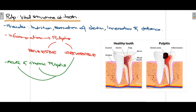When this pulp is inflamed it is known as pulpitis. Pulpitis is of two types: either reversible or irreversible. Irreversible pulpitis is further divided into two parts — it is either acute irreversible pulpitis or chronic irreversible pulpitis.